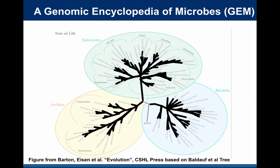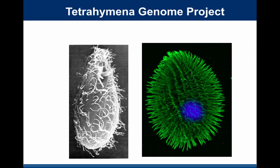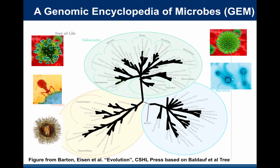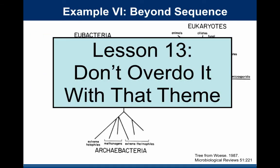We tried to convince them to do the Genomic Encyclopedia of Microbes to include eukaryotes — we didn't convince them because their genomes tend to be larger. I did collaborate when I was at TIGR with Ed Arias and others at UCSB on sequencing the Tetrahymena genome, and I've been really interested in filling in the eukaryotic tree of life, but we've still never been able to get funding to do that. And someone probably should do this for viruses too.